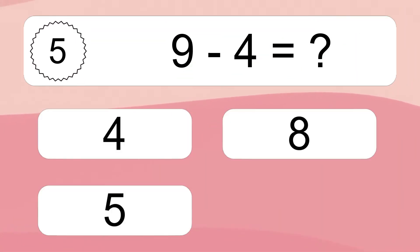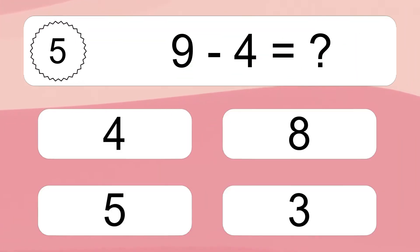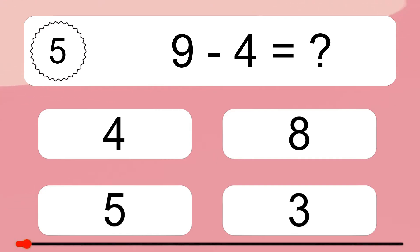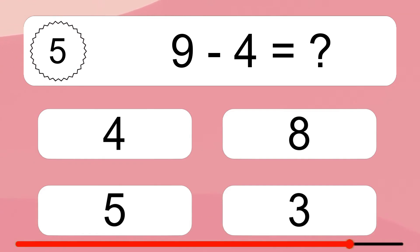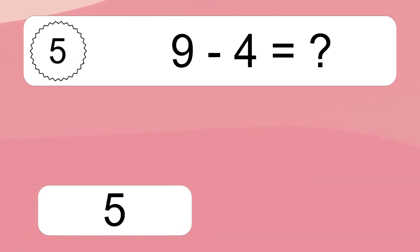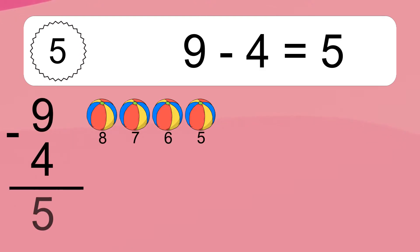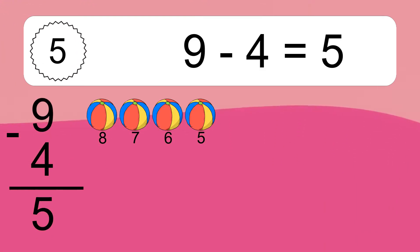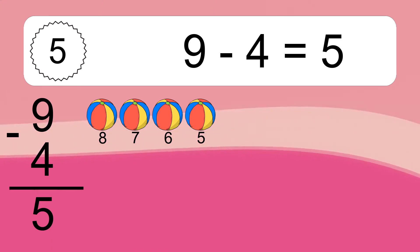9 minus 4 equals what? 9 minus 4 equals 5. Let's count it: 8, 7, 6, 5.